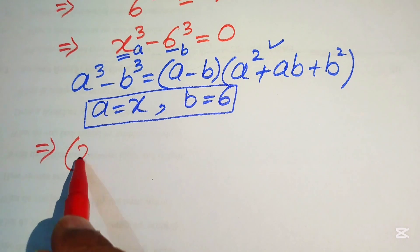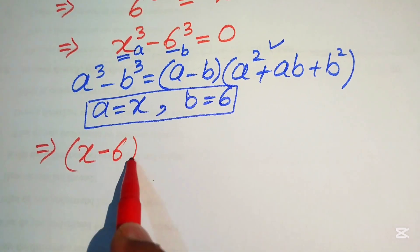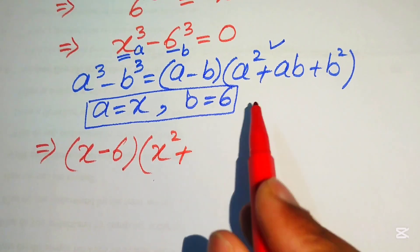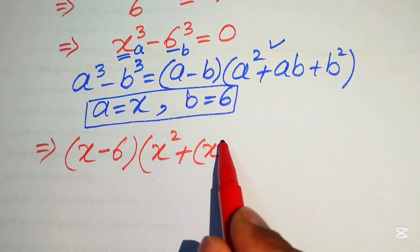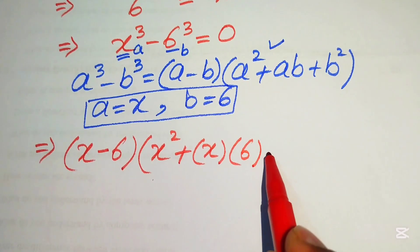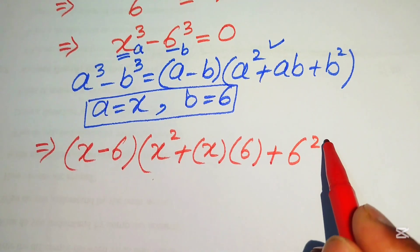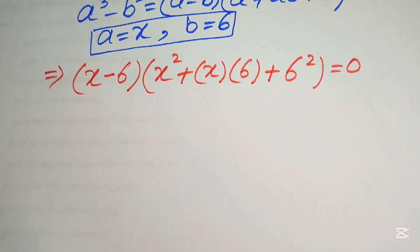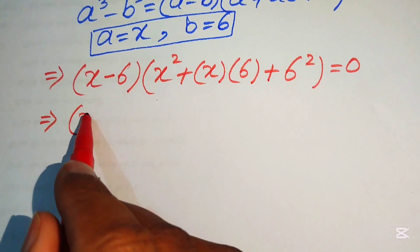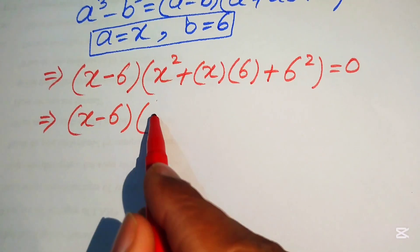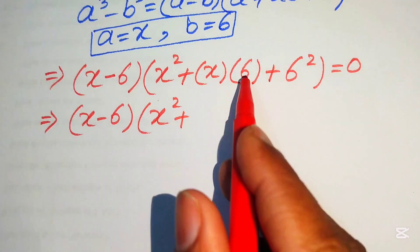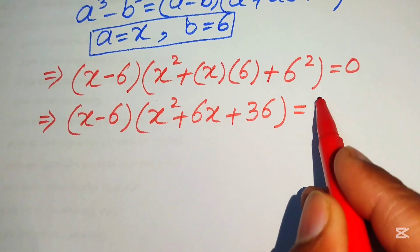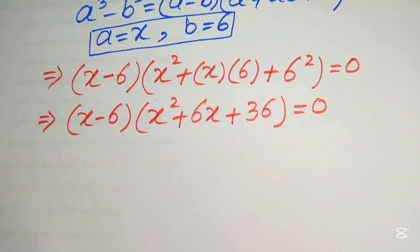Substituting, we get (x minus 6) times (x² plus x·6 plus 6²) equals 0, which simplifies to (x minus 6)(x² plus 6x plus 36) equals 0.